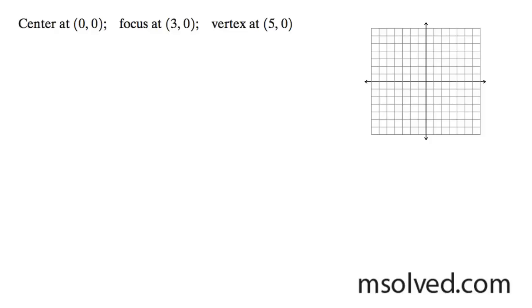All right, we want to find the equation of this ellipse based off the values they give us here. So starting off, we've got a center at (0,0), and then we have a focus at (3,0), which means we'll have one immediately over here, and then our vertex is at (5,0) and (-5,0).